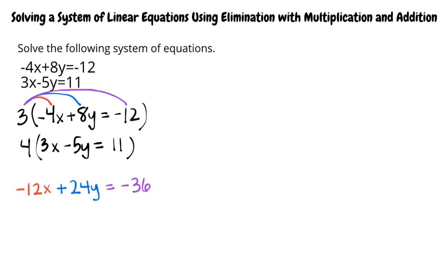Can you simplify the second equation? Distributing the 4 over the 3x and the negative 5y, I get 12x minus 20y. As for the right-hand side of the equation, 4 times 11 is 44. Great job!